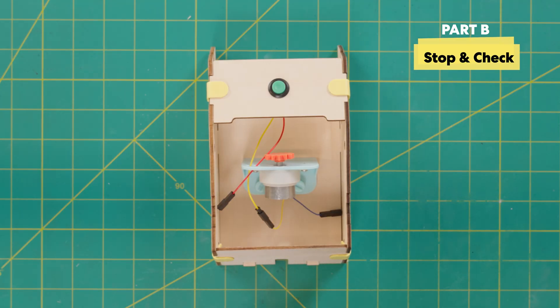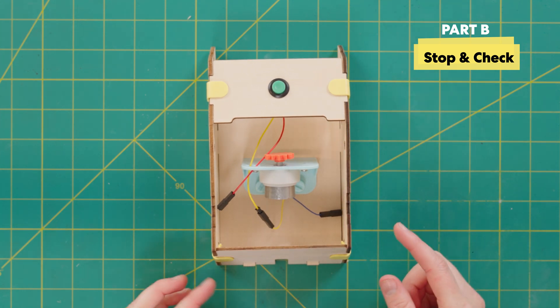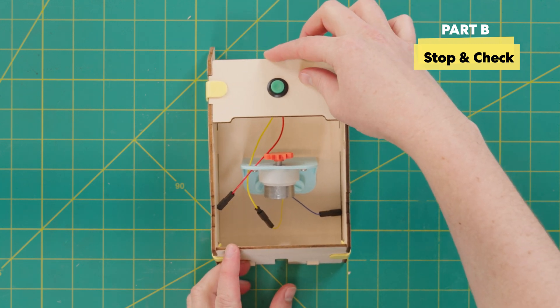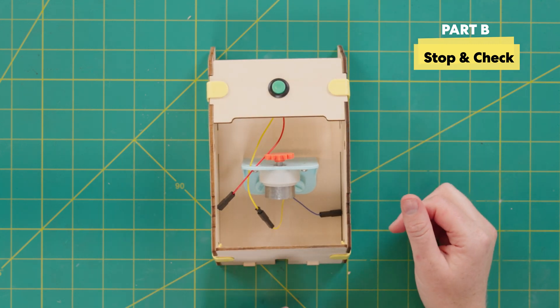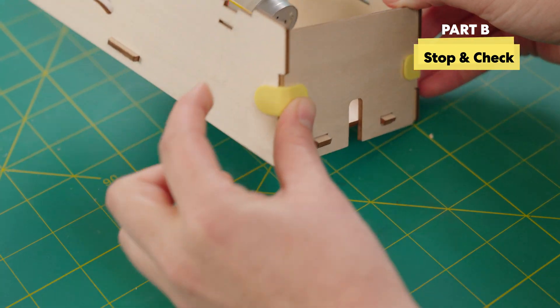Stop and check. Before moving forward, let's make sure that your build matches what we have here. The orange gear should be facing forward and the straight edge of this wood panel should be facing forward as well. Also, let's make sure each of the tabs from these clips are firmly into the holes from the slots.